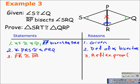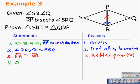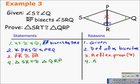That's the reflexive property of congruence. Now we have a side and two angles, and the side is the non-included side. So we have angle-angle-side marked in both of our triangles. We can go right ahead and write our proof statement: triangle SRT is congruent to triangle QRP by angle-angle-side.